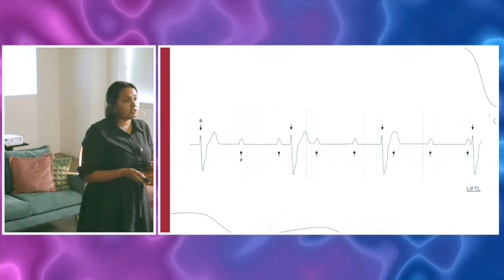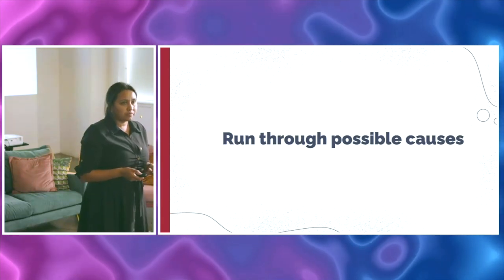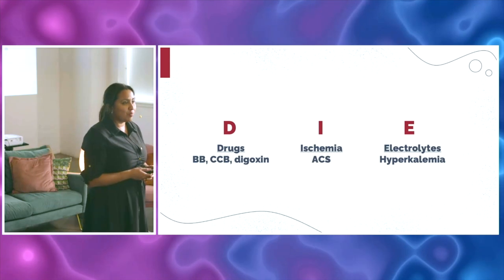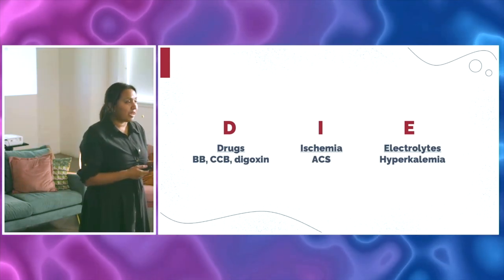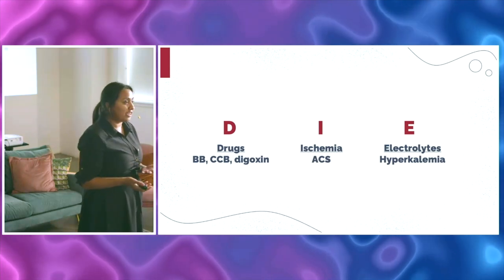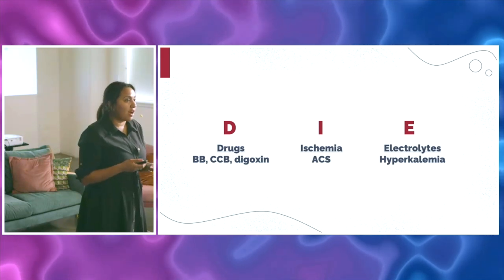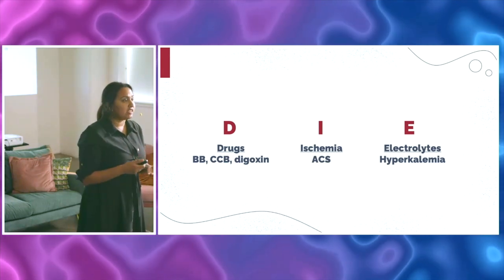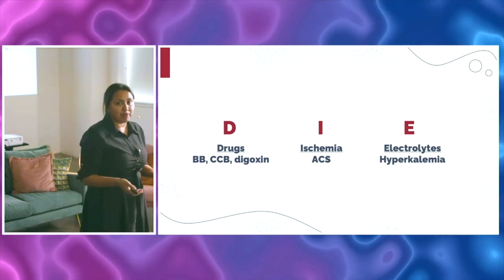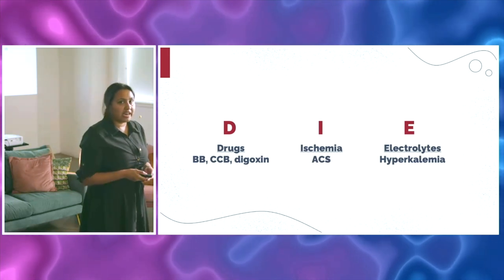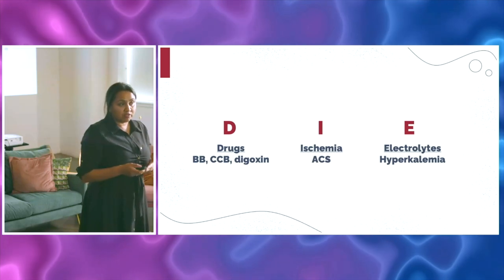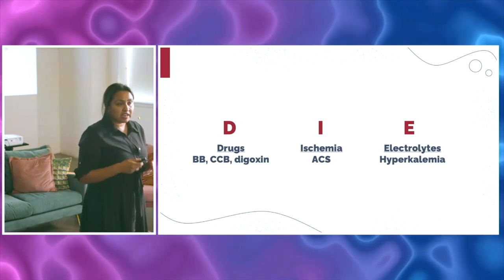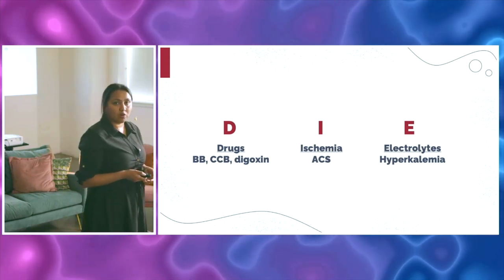Now run through the possible causes with a mnemonic: DIE — don't let your patient die. D is for Drugs: beta blockers, calcium channel blockers — did grandma take a couple extra because she was confused? Are they on digoxin with nausea, vomiting, and diarrhea the last couple of days? Really important to look at their med list and get collateral history from EMS or family. I is for Ischemia: looking at acute coronary syndrome and how it can progress to different types of blocks.